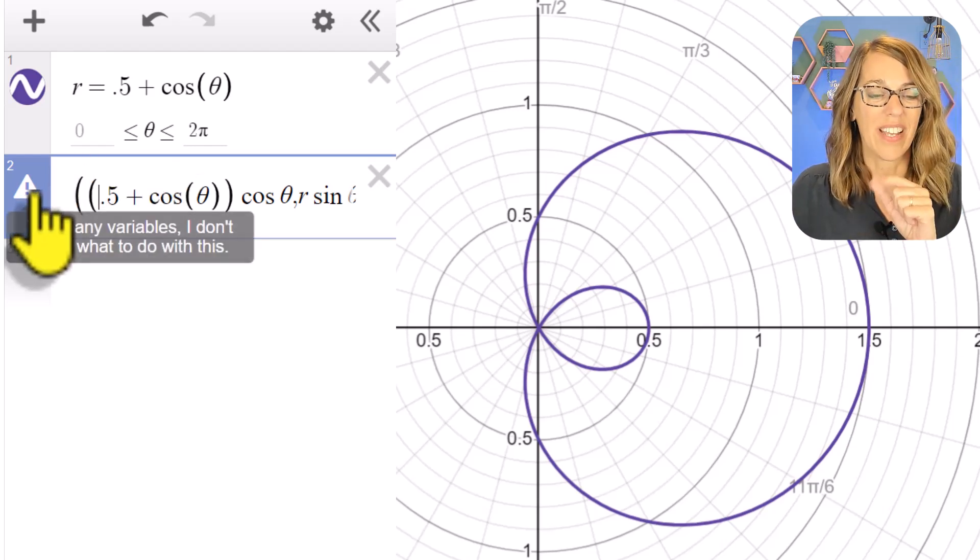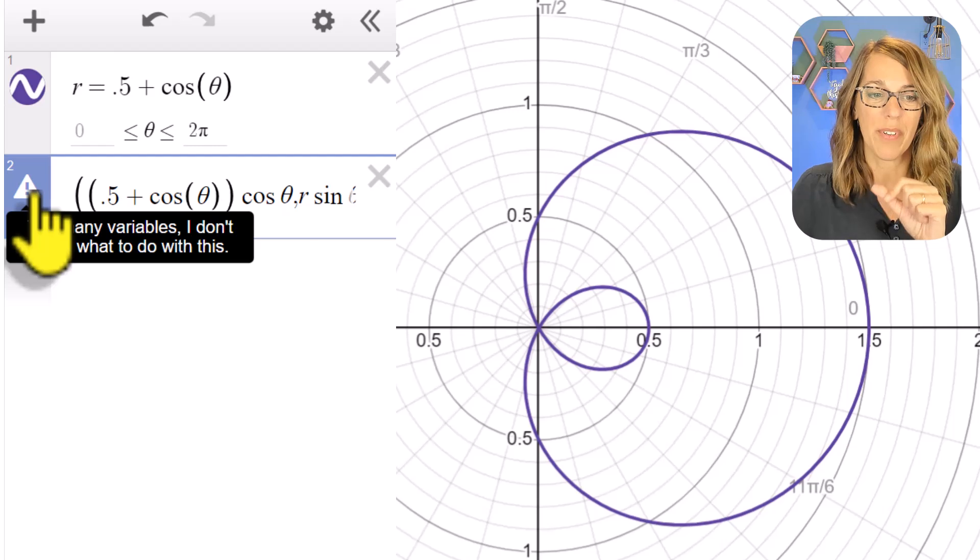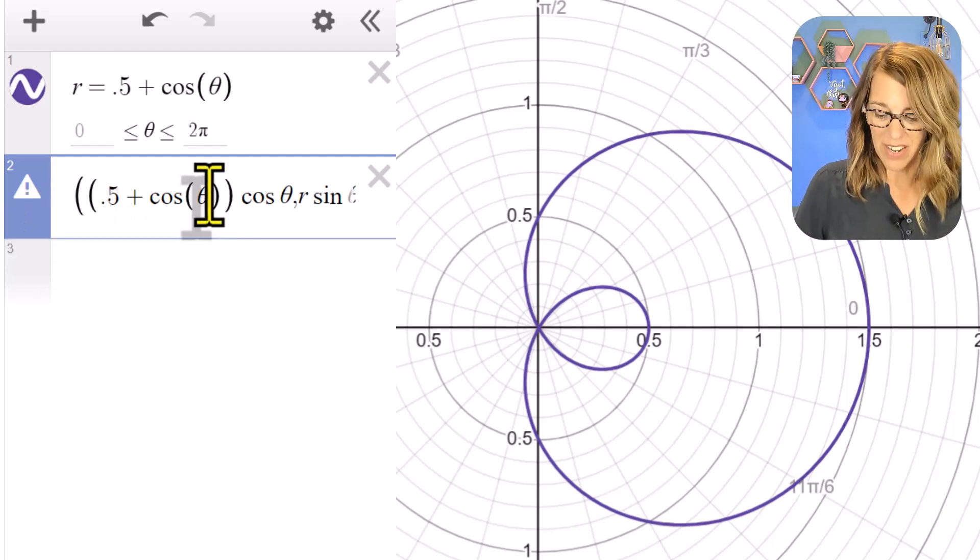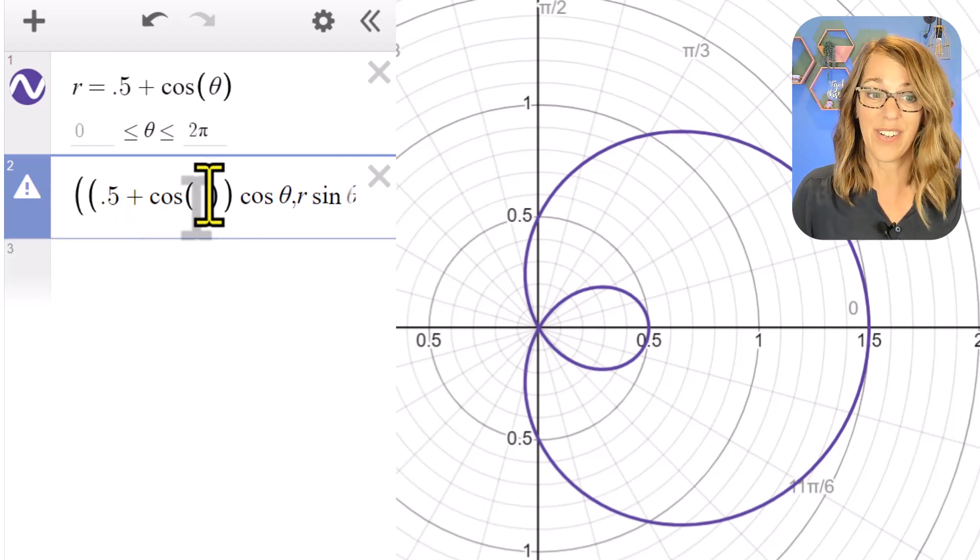But I still have that value theta, and if I click on this it says 'too many variables, I don't know what to do with this.' So instead of using theta, I'm going to replace it with T so I can use a slider.